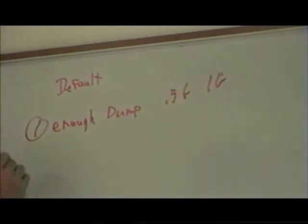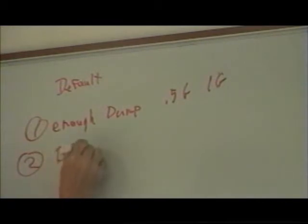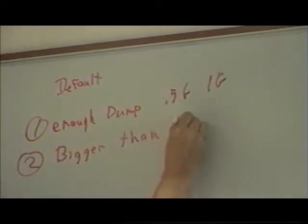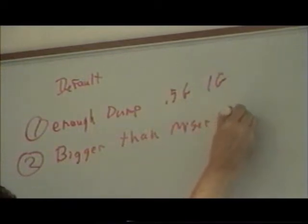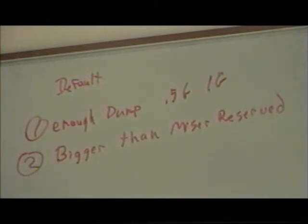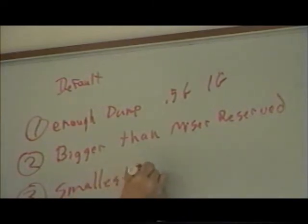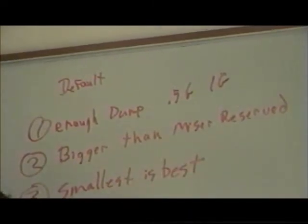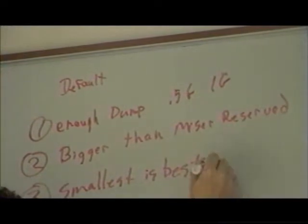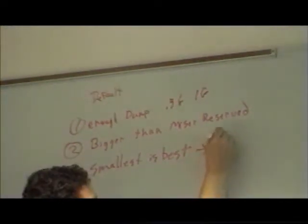Then you have to get into Miser. If you want Miser work bigger than Miser's reservation, the Miser reserved area can be used by interactive users. And if Miser wants it, then the interactive users go out to that area. The third rule is: smallest is best, which basically means less swapping.